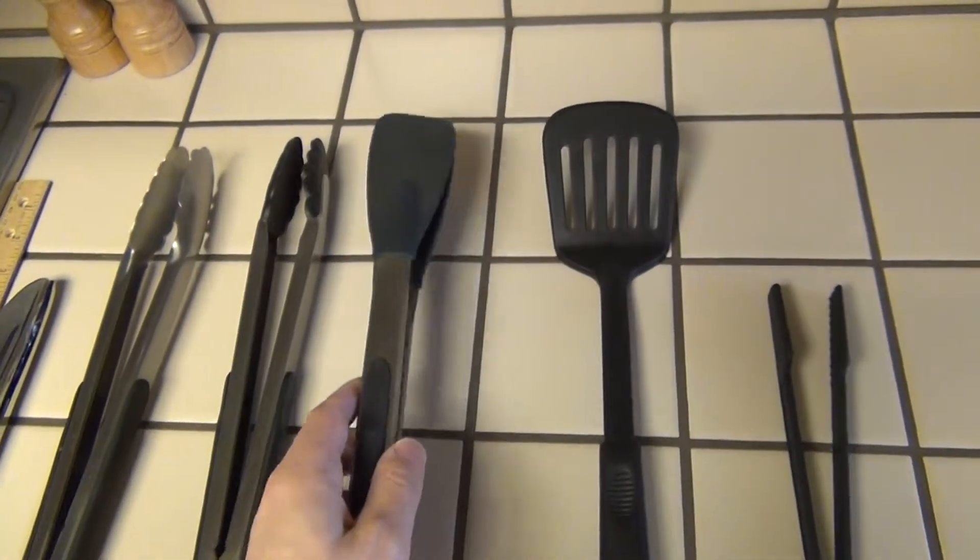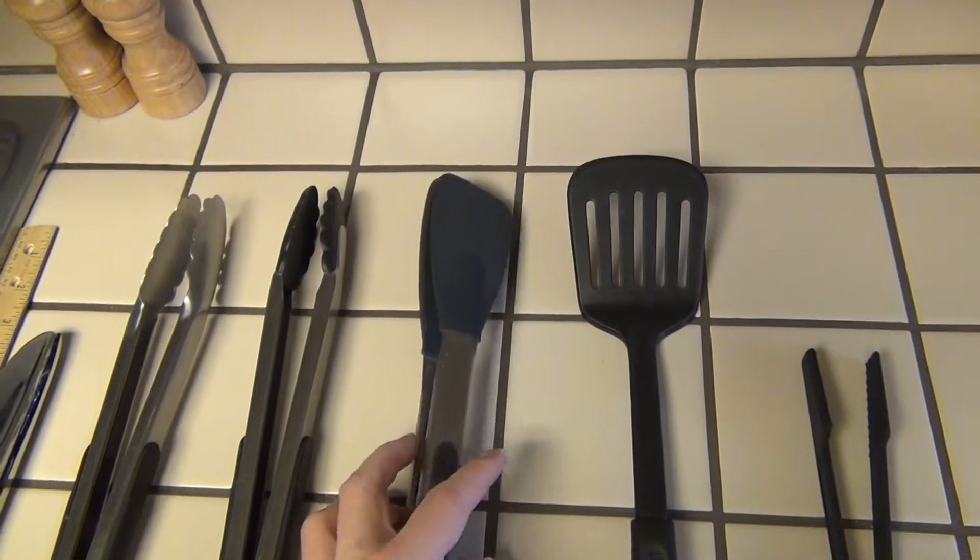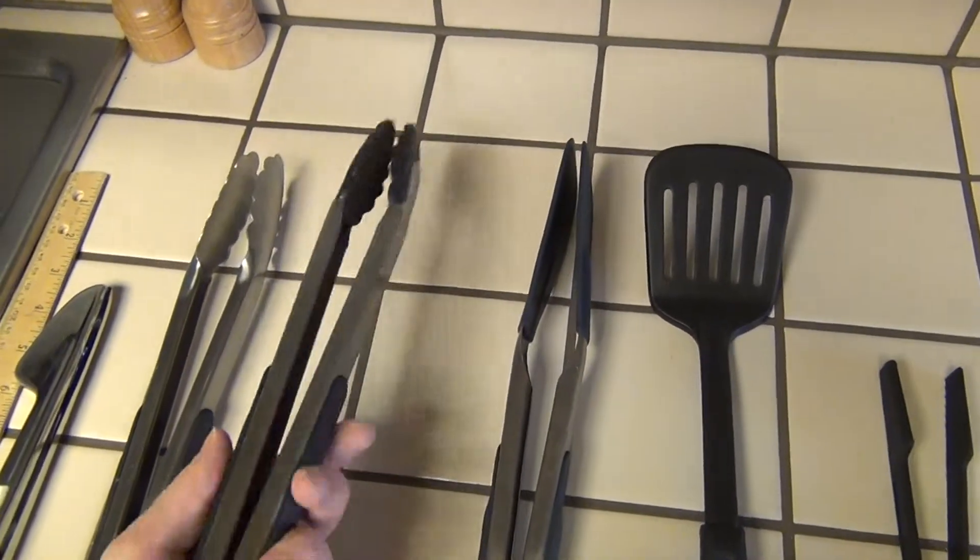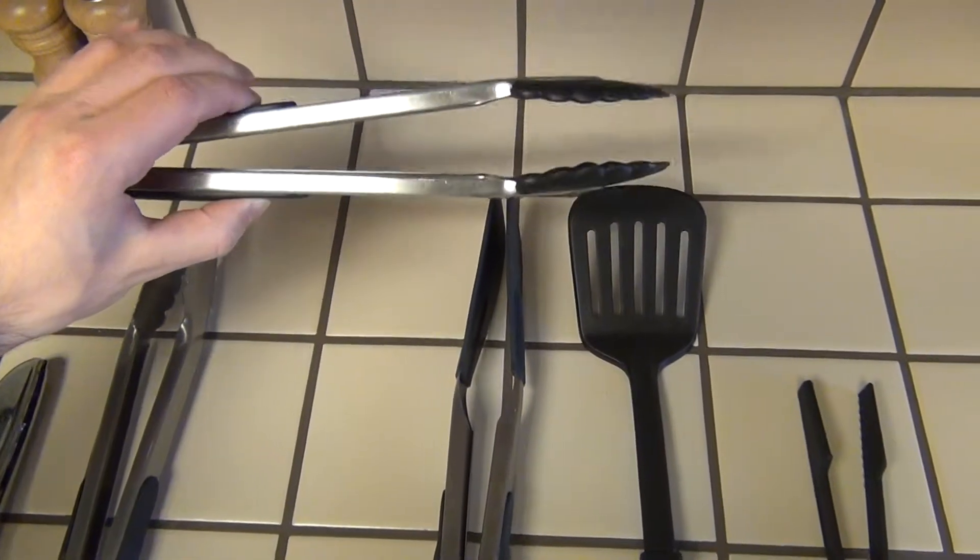What you'll want to do with these is, let's say you need to flip something that's going to be a little more tender. You might say, well, maybe I want tongs. So you go in there, but due to the spring action on these and the rigid teeth...